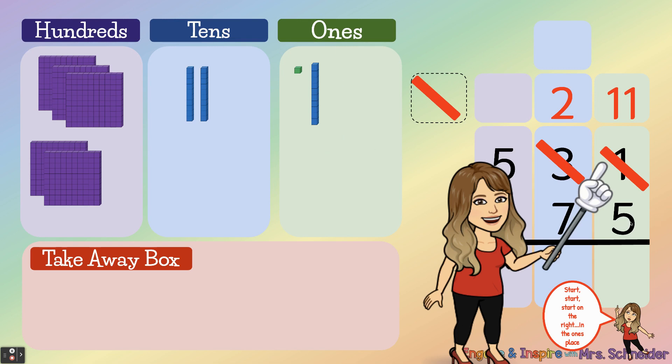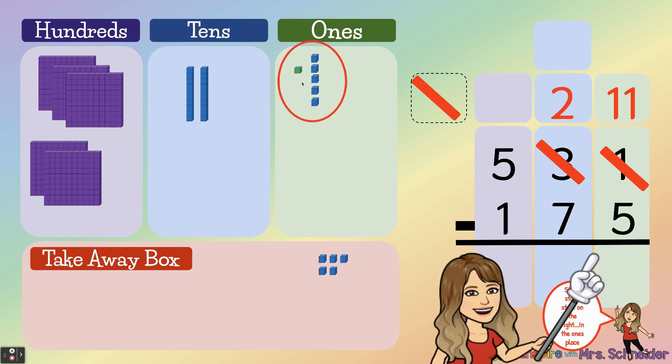All right, let's subtract five. One, two, three, four, five. How many ones do I have left? Right, six, because eleven minus five is six.